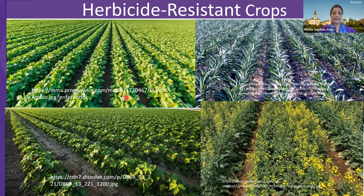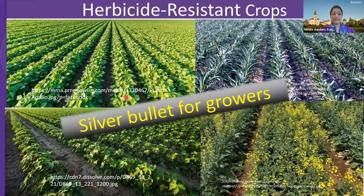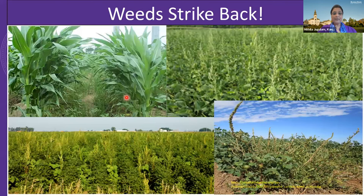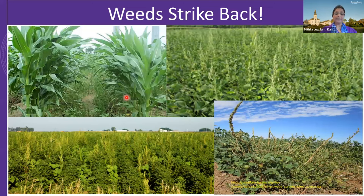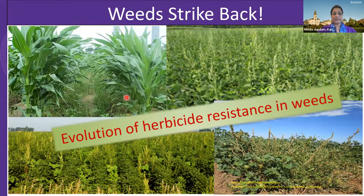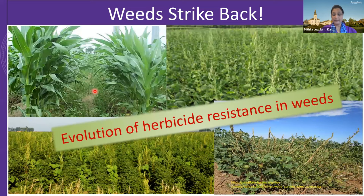Upon development and commercialization of herbicide resistant crops, the way weeds were managed changed significantly in growers' fields. Fields started to look more weed-free upon adoption of herbicide resistant crop technology — this was almost like a silver bullet for growers. However, that didn't last long, because the use of herbicides as a sole means of weed control and the extensive adoption of herbicide resistant crop technology resulted in the evolution of herbicide resistance in weeds.